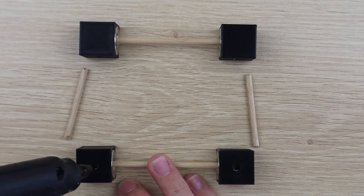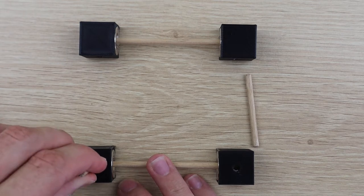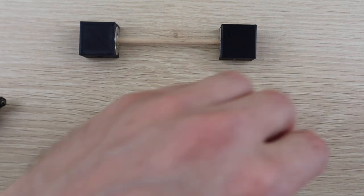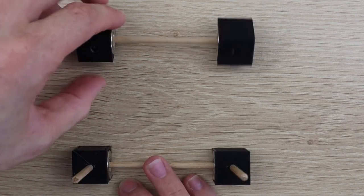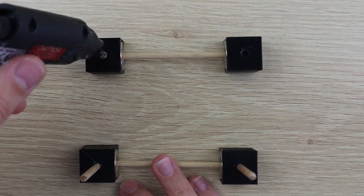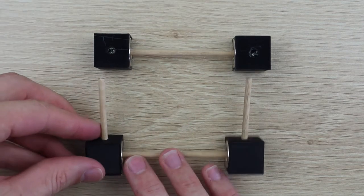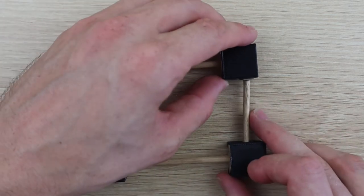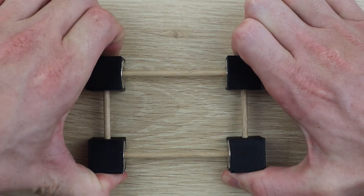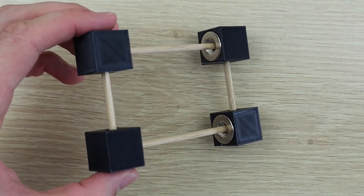Next, glue the two width pieces into the sides of one set of blocks, and then glue the two lengths of the base together. This completes the first part of the base, so we can now move on to making the rotor.